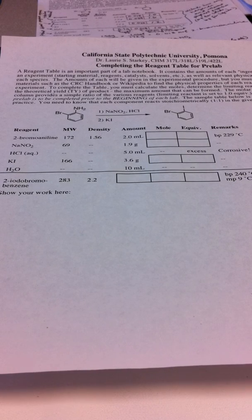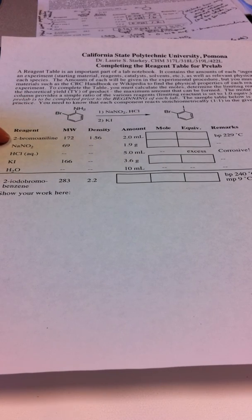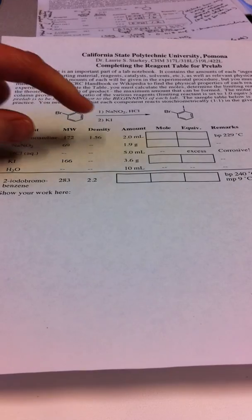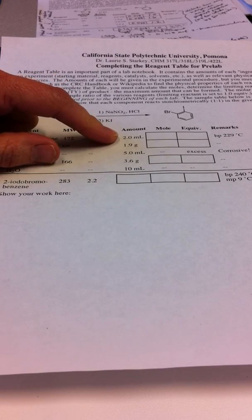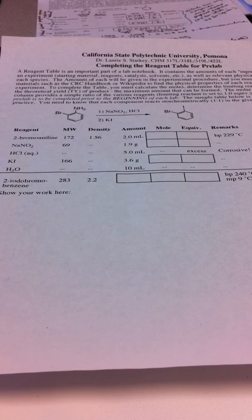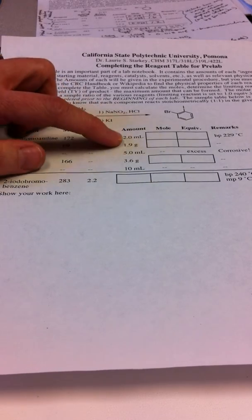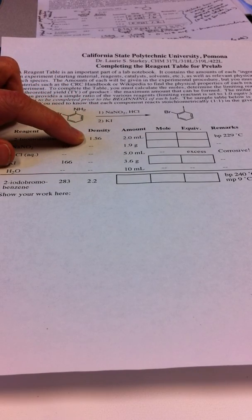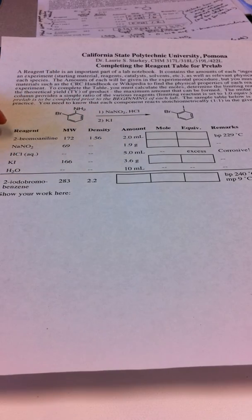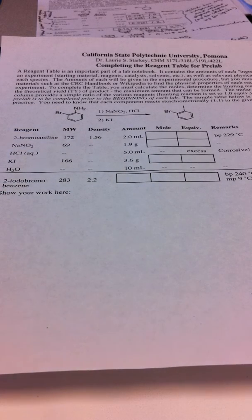Now if we're going to calculate the moles of 2-bromoaniline, it's given to us in volume and we need to figure out how to convert volume into moles. We can't do that directly, but we can use the density to convert the volume into mass. It says here that it has a density of 1.56 and we need to think about the units of density.